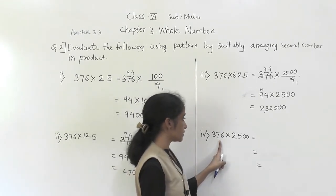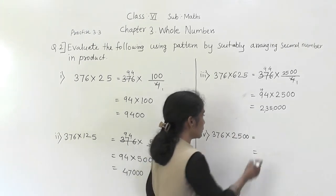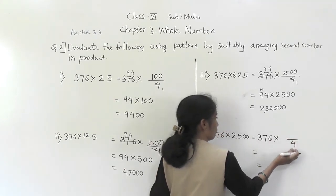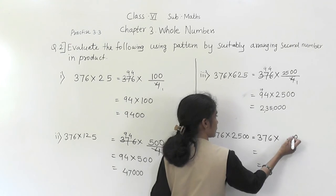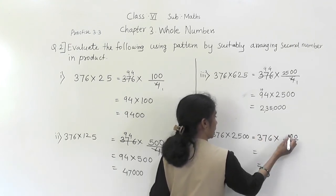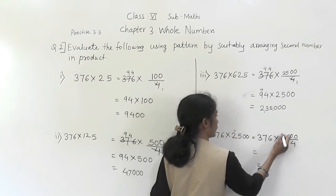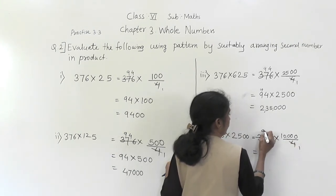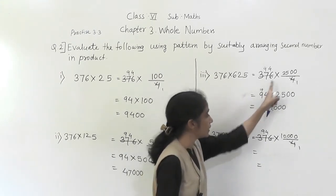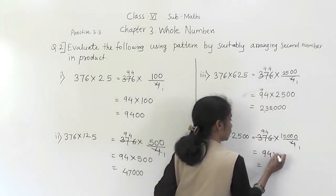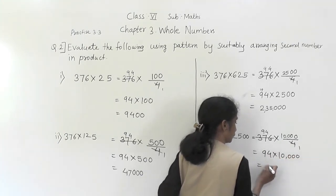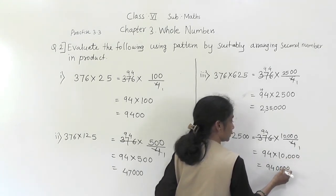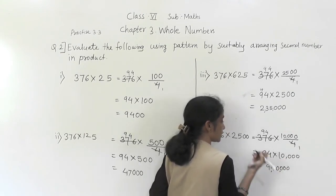For 376 × 2500: dividing 376 by 4 again gives 94. Then 4 × 2500: 4 zeros are 0, 4 zeros are 0, 4 fives are 20 (carry 2), 4 twos are 8 plus 2 = 10, giving 10000. So 376 ÷ 4 = 94, and 94 × 10000 = 9,40,000.